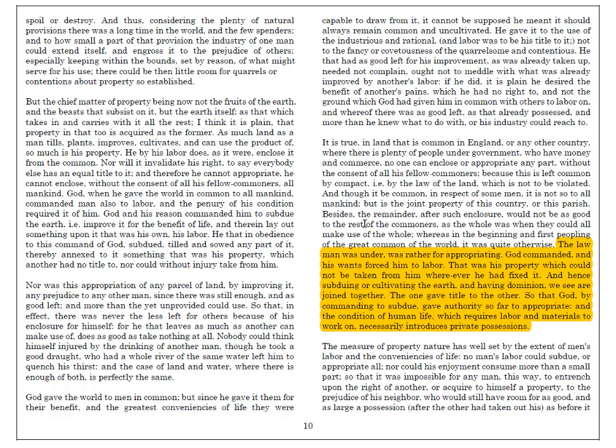God created us both as decision-making machines with a will and as machines that consume nutrients. If we don't replace those nutrients, we defeat God's work in creating us. Locke writes at the bottom of page 10: the law man was under was rather for appropriating. God commanded, and his wants forced him to labor. That was his property, which could not be taken from him wherever he had fixed it. And hence, subduing or cultivating the earth and having dominion are joined together — the one gave title to the other. So God, by commanding to subdue, gave authority so far to appropriate. And the condition of human life, which requires labor and materials to work on, necessarily introduces private possessions. God requires private property in order to see the fulfillment of his own creation.